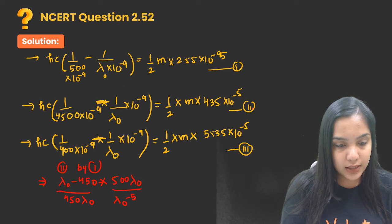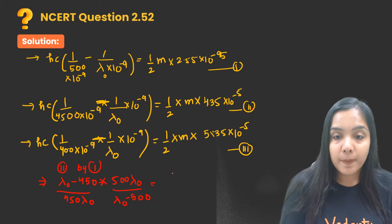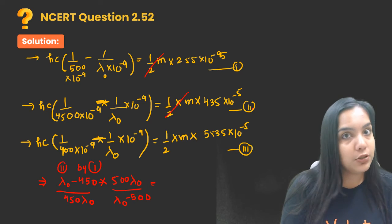Equal to, now on the other side these two values will be cancelled, so we will be cancelling this minus 5 powers as well. I will get 4.35 upon 2.55 squared, whole squared.